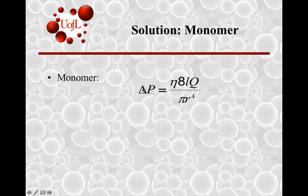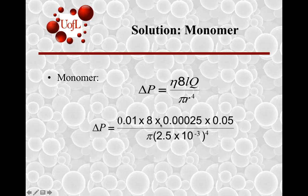You know viscosity for the monomer, you know Q, L, and R. If you put these terms together, you will estimate that it's about 8 kilopascals. You need to make sure that you convert all these terms to the same units in meters for the dimensions in order to get delta P in kilopascal. Very small amount of pressure drop.